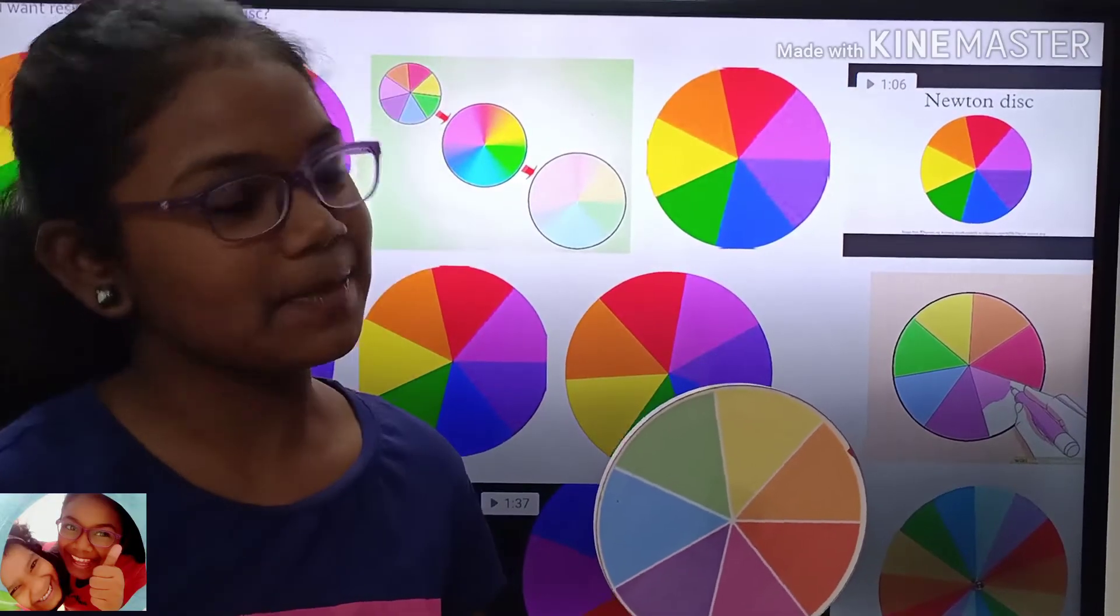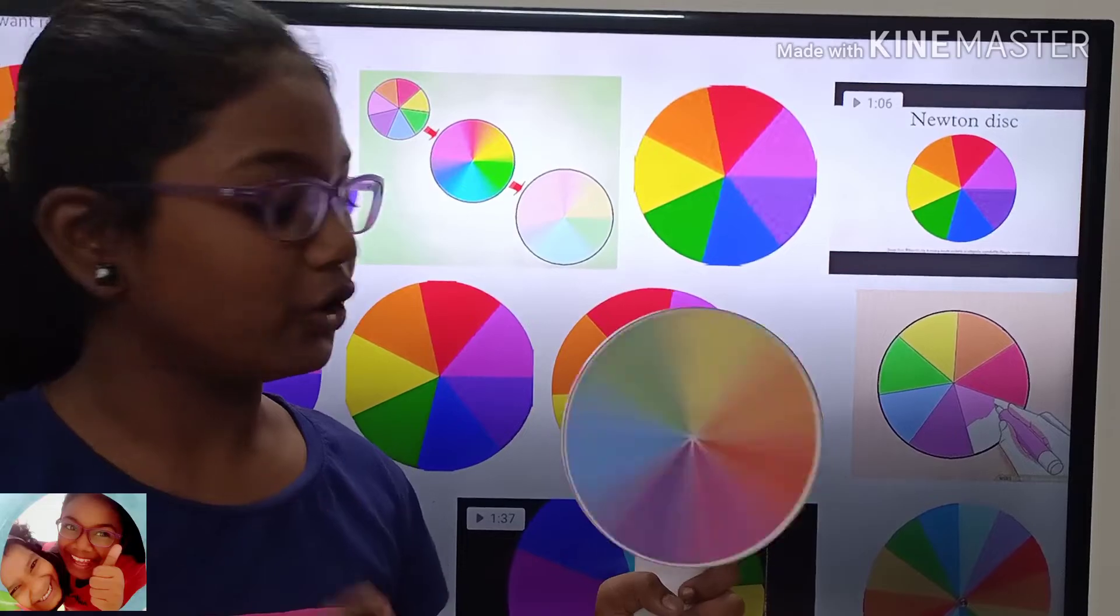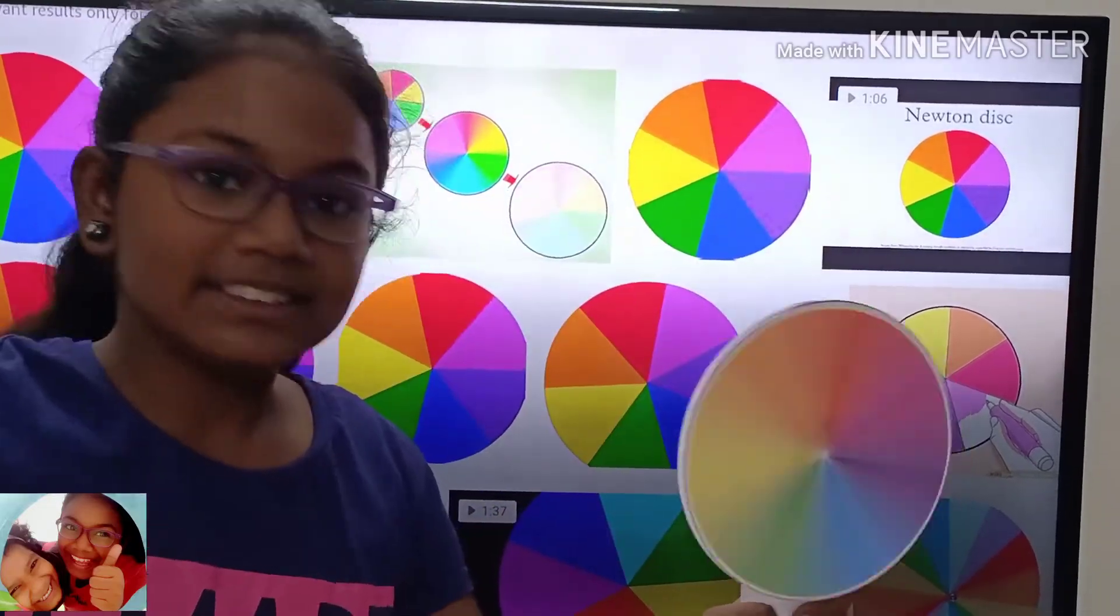Let us see the experiment. When you spin it faster, you can see it white.